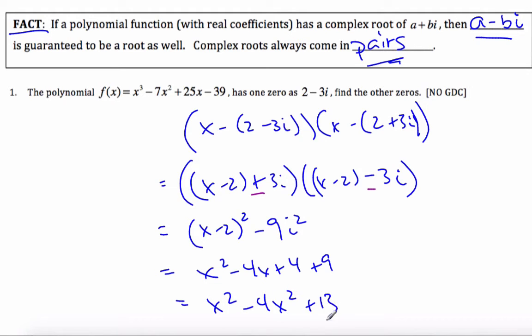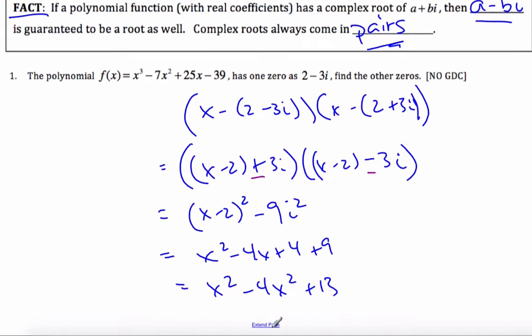So the quadratic factor is this one here. If I want to find the other zero, I can divide by this. But one thing I know is this factor times some mystery factor of x plus something has to be x³ all the way to -39. The only way to get -39 is 13 times -3.